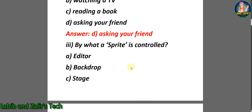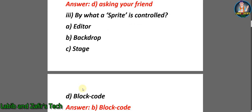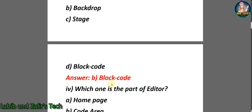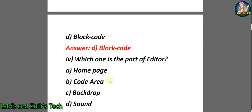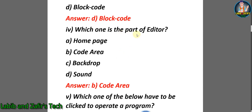Number three: By what is a sprite controlled? A) Editor, B) Backdrop, C) Stage, D) Block code. The correct answer is D, block code. Number four: Which one is a part of the editor? A) Home page, B) Code area, C) Backdrop, D) Sound. The correct answer is B, code area.